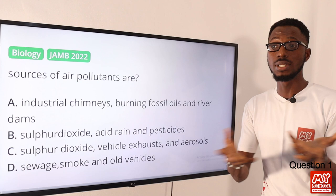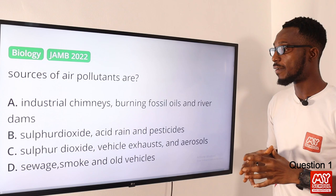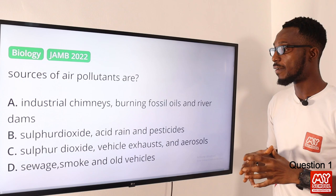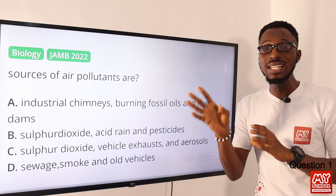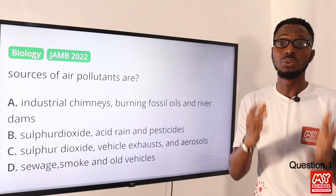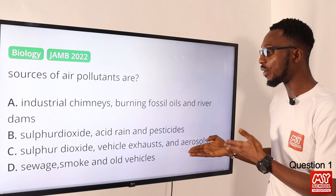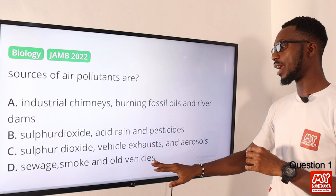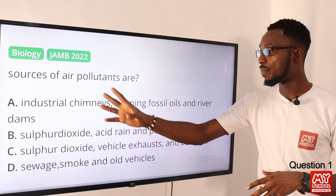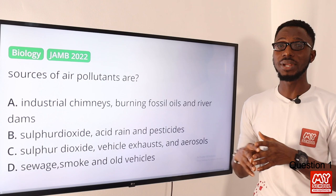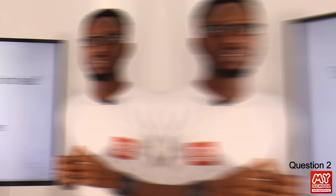Option C has sulfur dioxide, vehicle exhaust, and aerosols. Vehicle exhaust refers to gases from combustion from vehicles. Aerosols are fine particles of solids suspended in air — natural ones include fog and mist. Option D has seaweed, smoke, and old vehicles; old vehicles are not directly linked to the context. The most valid option is option C.